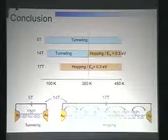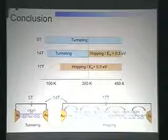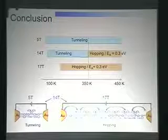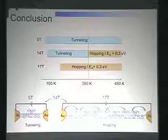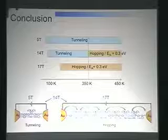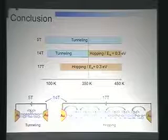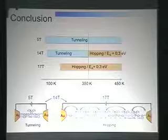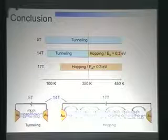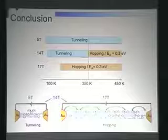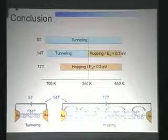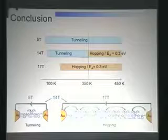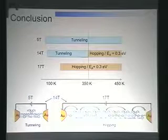So I'll just conclude my work. For 5T molecule, it shows that the dominant transport mechanism is tunneling. For 17T molecule, the dominant transport mechanism is hopping and the calculated activation energy is 0.3 electron volts. And for 14T, it demonstrates two transport behaviors. First, tunneling up to around 350 Kelvin. And for temperature higher than 350 Kelvin, it changes from the initial tunneling to hopping behavior, and also shows the same activation energy around 0.3 electron volts. Okay, that's all for my talk for today. Thank you.